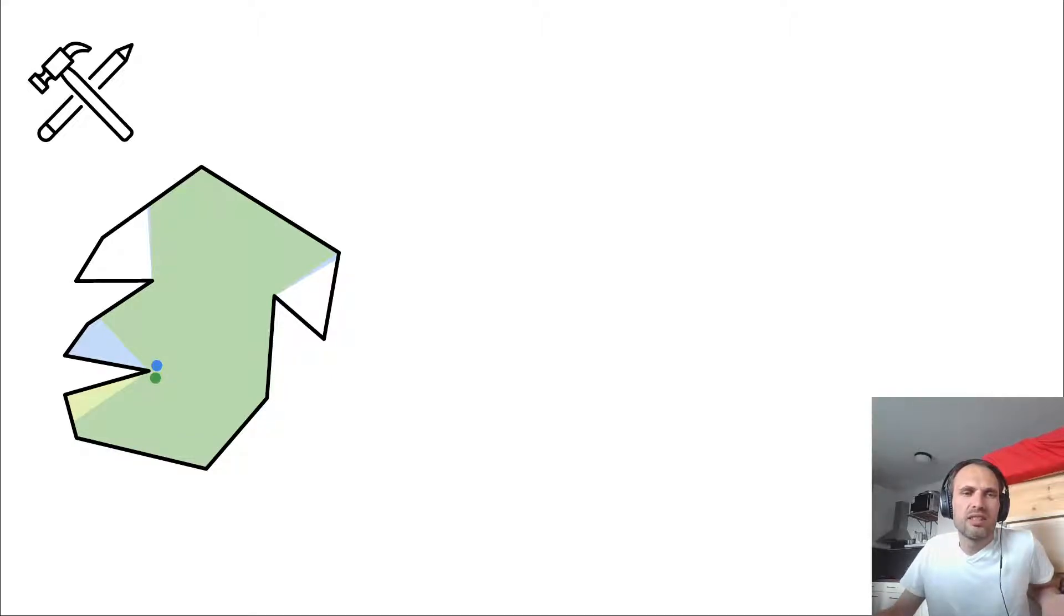But if you look at the difference of visibility up here, that's kind of negligible and the same here. It just sees a teeny tiny bit more. And that leads us naturally to this idea that if I'm close to reflex vertex, then I should have there more guard candidates. And if I'm far away from all the reflex vertices, then I would need less.